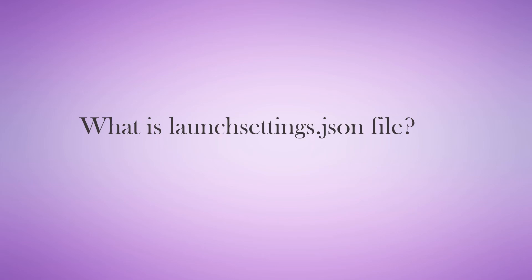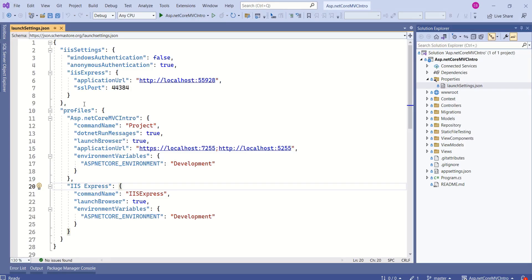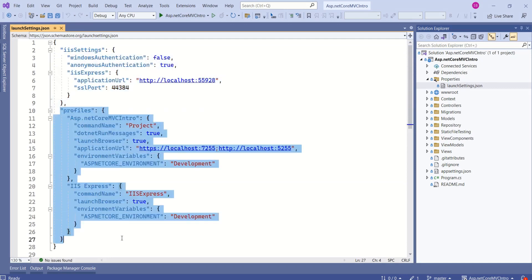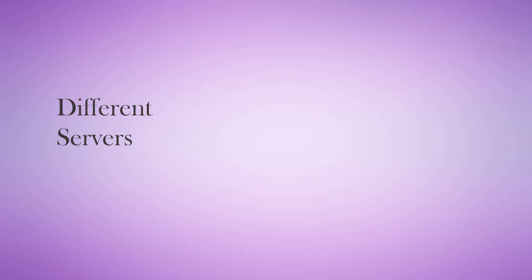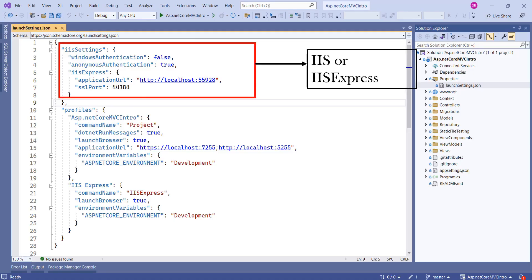If you are wondering what launchsettings.json is — it is a configuration file that contains settings controlling how our web application is started on a development machine. This file has two important sections. The first section is IIS settings and the second is the profiles section. ASP.NET Core applications can make use of different servers such as Kestrel, IIS, or IIS Express. The IIS settings section contains the settings required to debug the application under IIS or IIS Express.